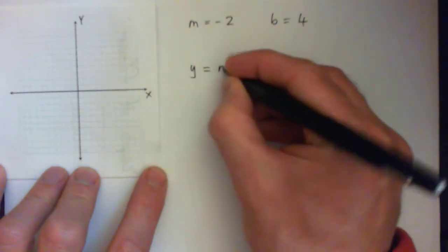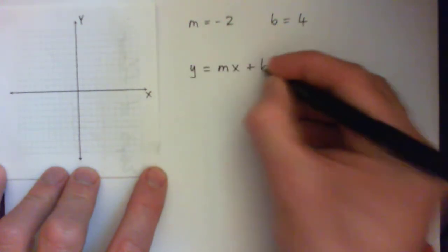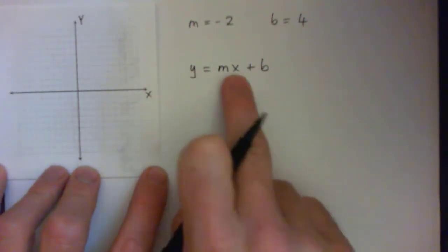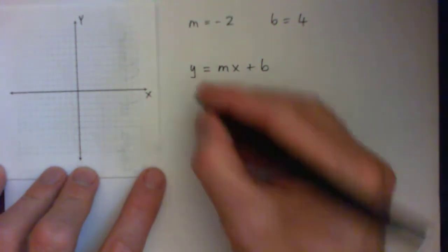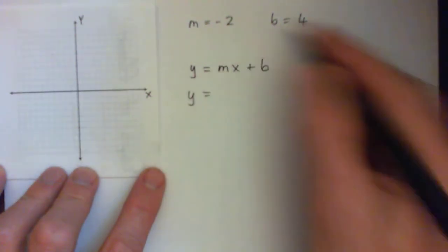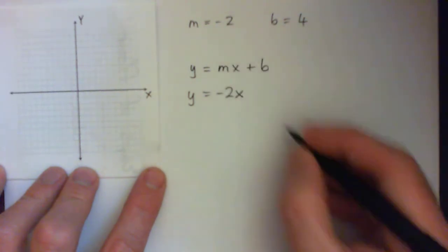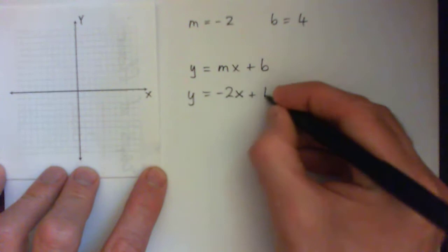So we're all going to write down y equals mx plus b. So that's the standard form of your linear equation. The output equals the slope times the input plus the y-intercept. And we'll just replace the letters with numbers. So m is negative 2. So it's negative 2 times x. Don't forget your x plus 4.